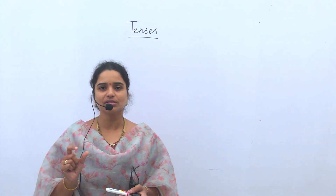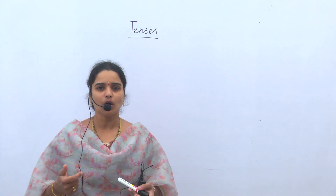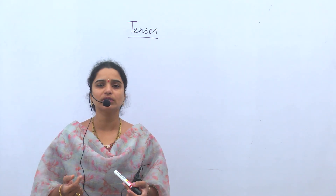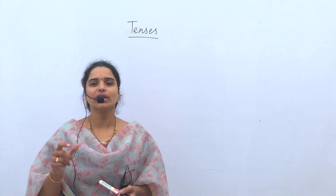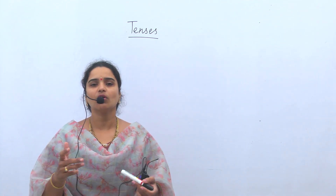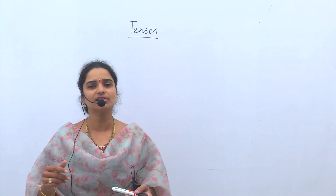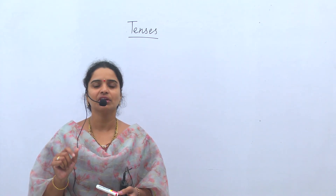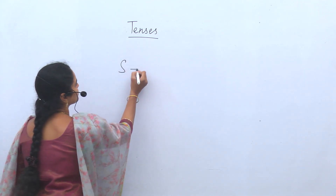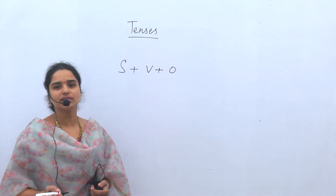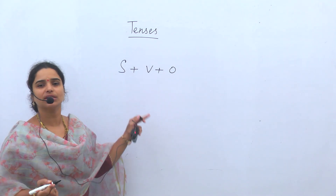Let me tell you one important point. First, understand how do we make a sentence? By joining a group of words together we make a sentence. Telugu language is different and English language is different. To understand English language we have to understand its structure first. The English sentence structure is S plus V plus O — S represents subject, V represents verb, and O represents object. Subject-verb-object — this is the pattern.